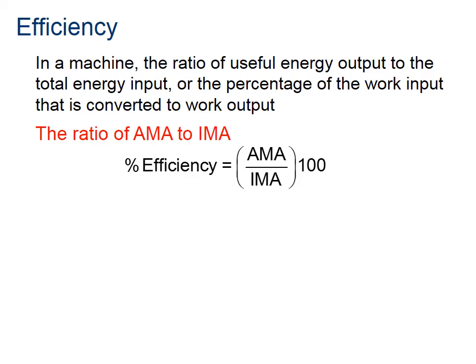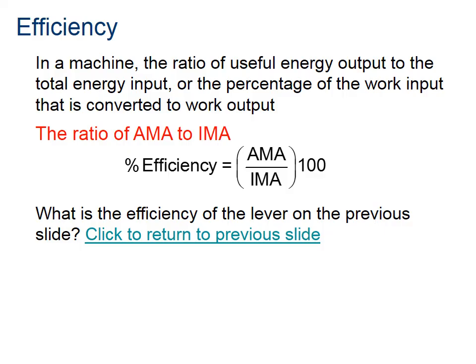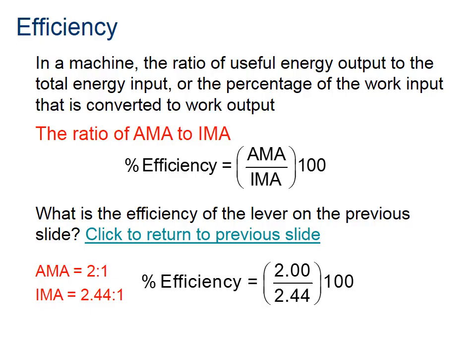Efficiency is a measure of how much energy we're getting out of a system. For simple machines, it tells us how much energy we get out for the energy we put in. Using our numbers — AMA of 2 and IMA of 2.44 — percent efficiency equals AMA divided by IMA, times 100. That gives us 82% efficiency.